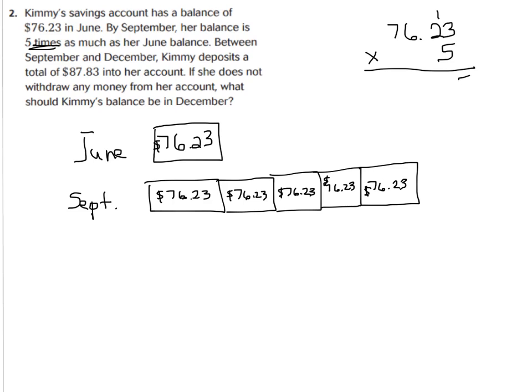Five times three hundredths is fifteen hundredths — regroup. Five times two tenths is ten tenths plus one more is eleven tenths — regroup. Five times six ones is thirty plus one more is thirty-one — regroup. Five times seven tens is thirty-five plus three more is thirty-eight. We need two decimal places for hundredths. So already in September, she has $381.15.